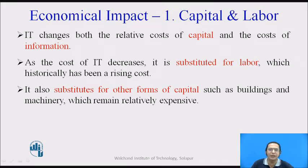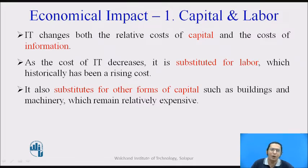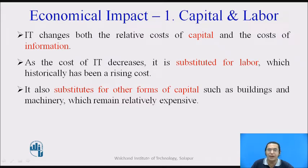The first impact is related to capital and labor. Information systems and IT change the cost of capital and cost of information. More and more information systems being implemented in a business firm are substituting for labor. The cost of labor — the wages one has to pay to employees — is always increasing. So information systems can be thought of as a replacement for labor, which always has a higher cost. Information systems can also be thought of as a substitute for other forms of capital like buildings and machinery, which remain relatively very expensive. Nowadays, because of the COVID pandemic, many employees are working from home, and that saves a lot on capital and labor expenses of a business firm.